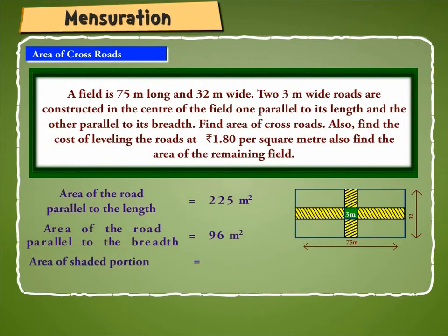Area of shaded portion is equal to 3 into 3 or 9 square meter. We subtract the area of the shaded portion from the total area of the two roads because it is calculated twice while finding the area of the roads separately.